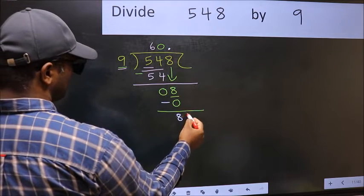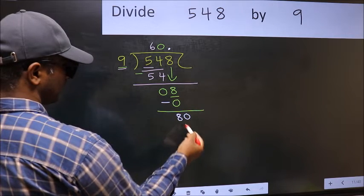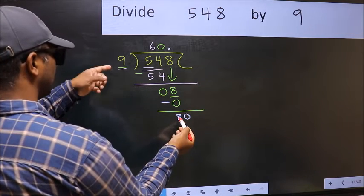So now you can put dot and take 0, so 80. A number close to 80 in 9 table is 9 times 8, which is 72.